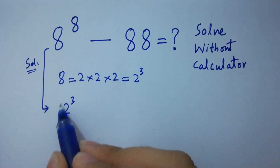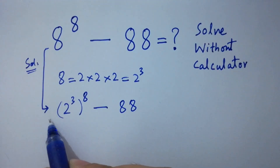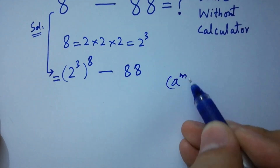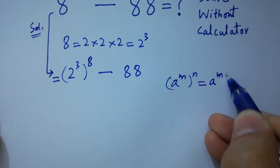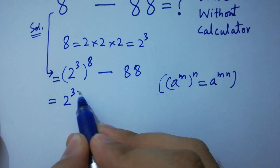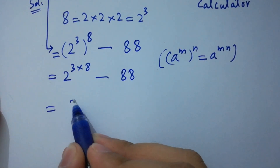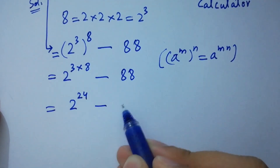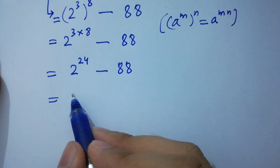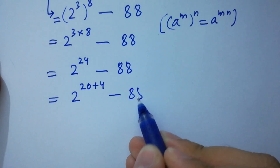We rewrite it as (2^3) to the whole power 8, minus 88. Using the rule a to the power m to the whole power n equals a to the power m times n, we get 2 to the power 3 times 8, which is 2 to the power 24, minus 88.